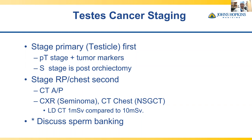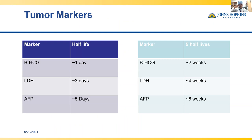As urologists, we always need to discuss sperm banking, specifically for patients who will need chemotherapy. Regarding tumor markers: beta-HCG, LDH, and AFP are the standard markers. LDH is used mainly for tumor burden and is not very indicative of active tumor. The half-lives are roughly one, three, and five days respectively. We want post-orchiectomy markers drawn five half-lives after orchiectomy — usually around six weeks — to incorporate all the half-lives.